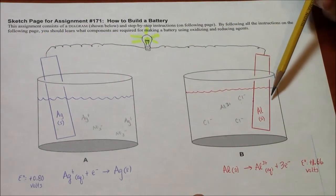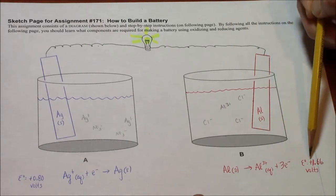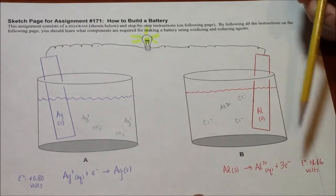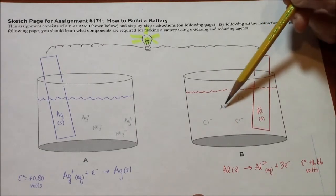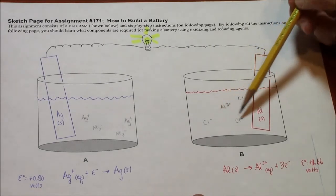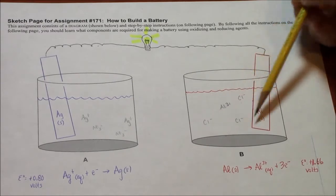On the right, we have aluminum metal, which can be oxidized, producing 1.66 volts positive. In the solution, you need some ions. The safest thing to do is to have the ions match. So this chloride could be other things, this aluminum could be other things, but this is a reasonable choice.